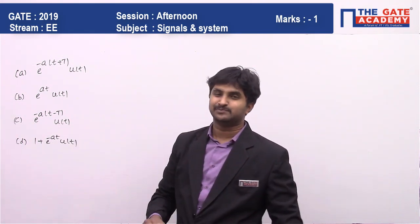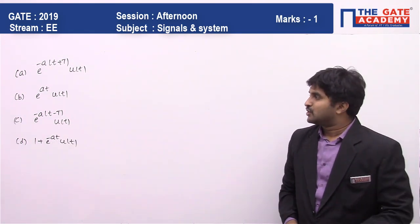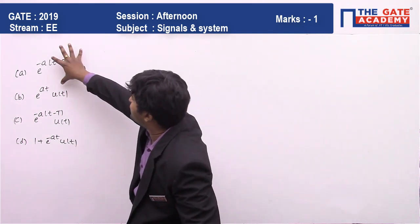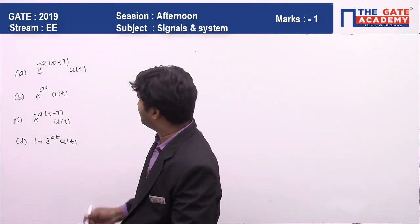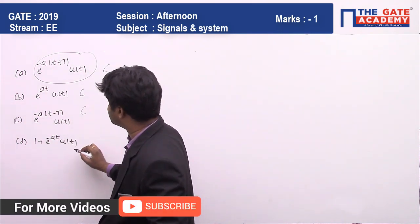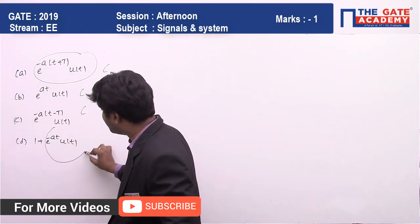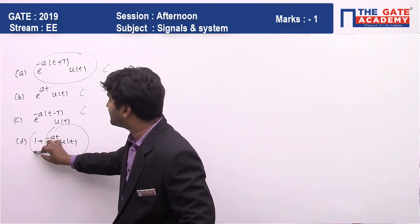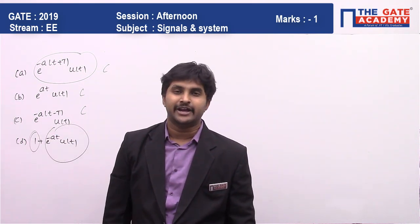So here you can clearly see, wherever u(t) is present, that part represents the causal part. So here completely causal, here it is causal, here it is causal. But what is happening here? Only this part u(t) is there, but here one is existing everywhere, it means there is a part which is left for t less than 0 also.